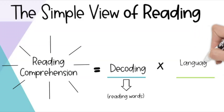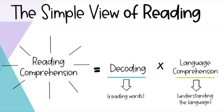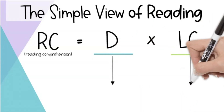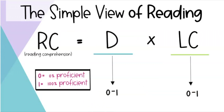And we need language comprehension, which is an understanding of the meaning of words and language without the text. So decoding is words-only, text-based, and language comprehension is language-only — just speaking and listening. You have to be able to read the words and then understand the language that the words are telling you. Now, decoding and language comprehension each get a score between 0 and 1 — where 0 is 0% proficient and 1 is 100% proficient. There is a multiplication symbol between these two, suggesting they build off of each other. If either one is missing or at zero, then reading comprehension will be at zero.